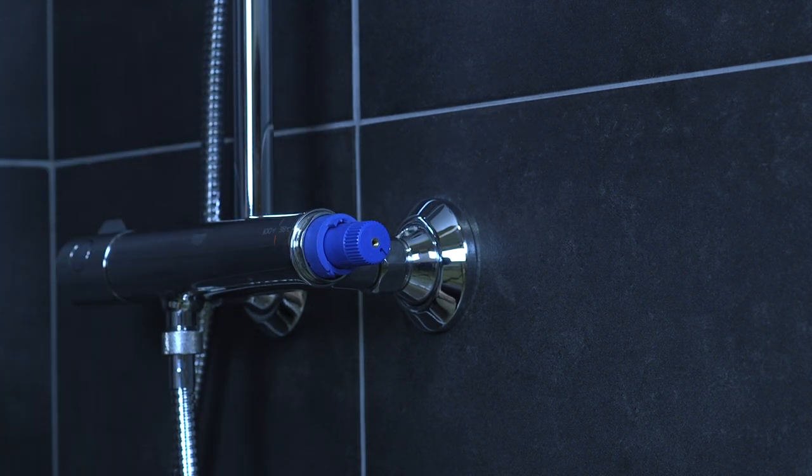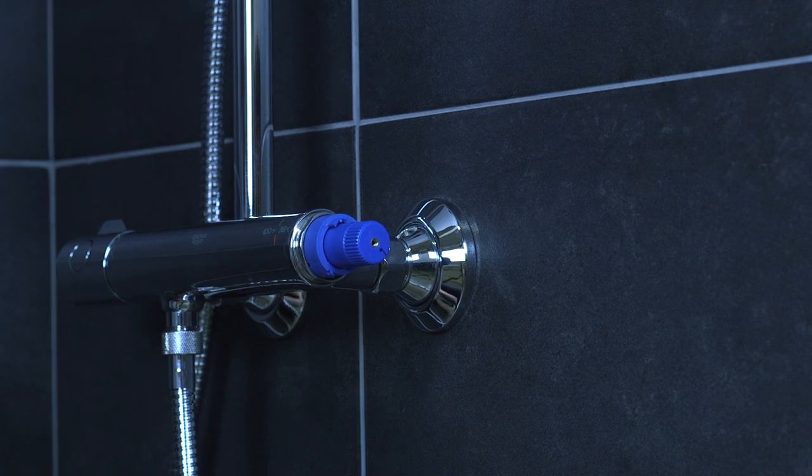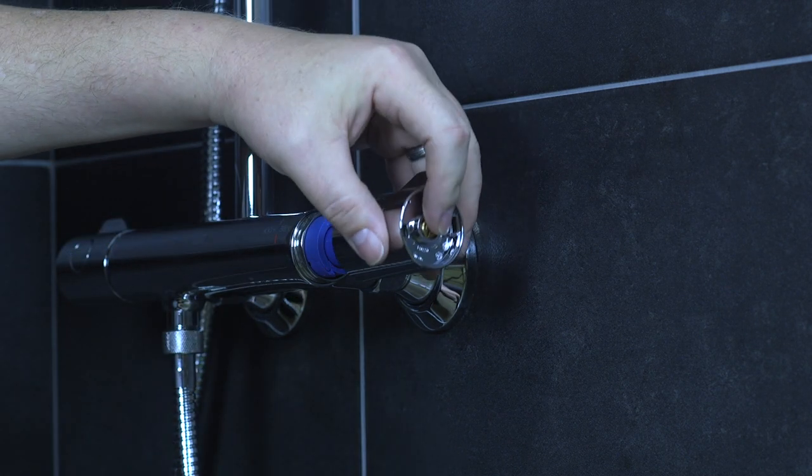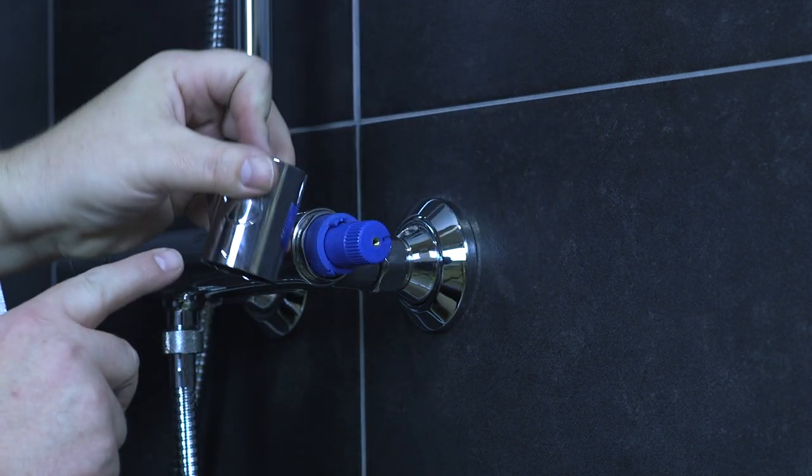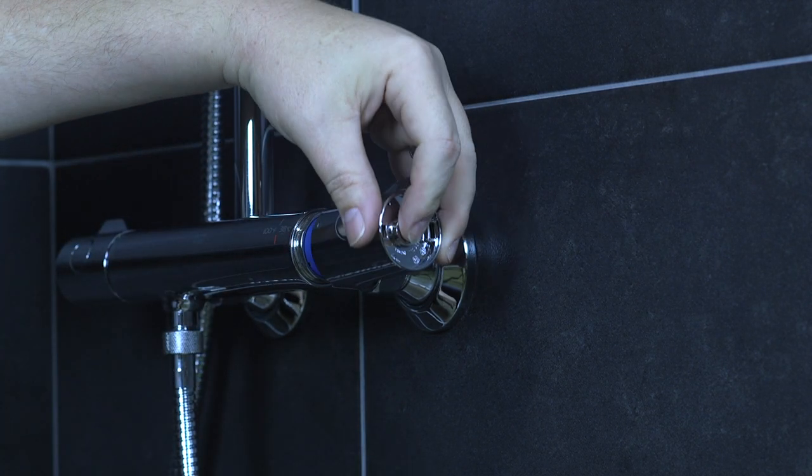At this point you could turn your hot and cold on. Being it is a thermostatic unit, you would have to go ahead and calibrate the unit. Once you get a hundred degrees of water flowing, just put your handle on and line up the little dimple with the hundred degree marker on the front of the valve.